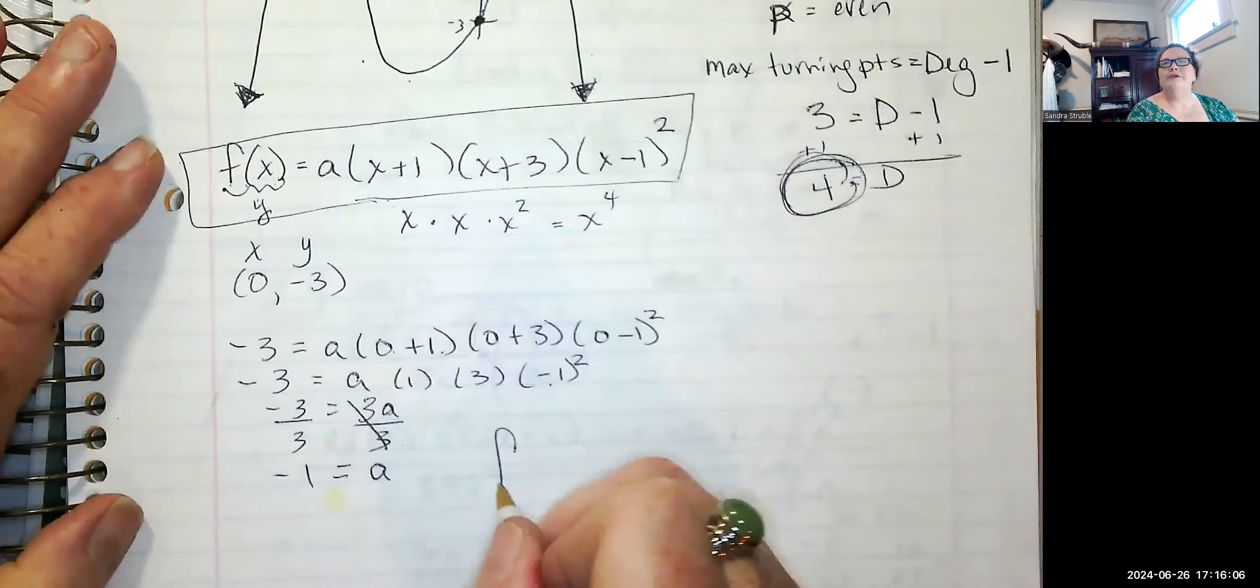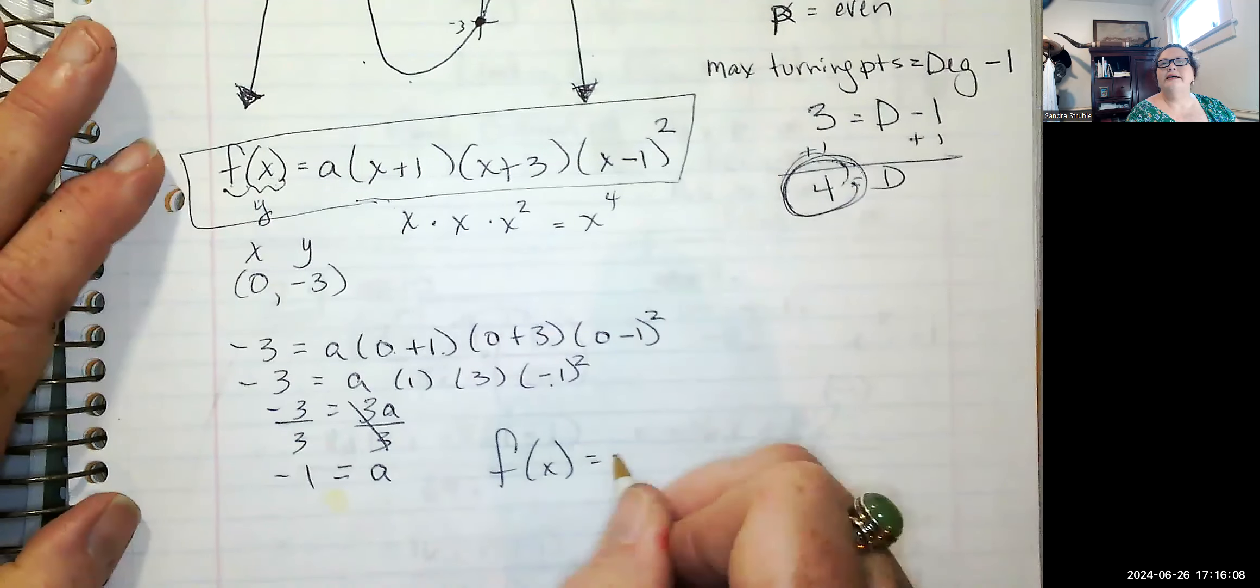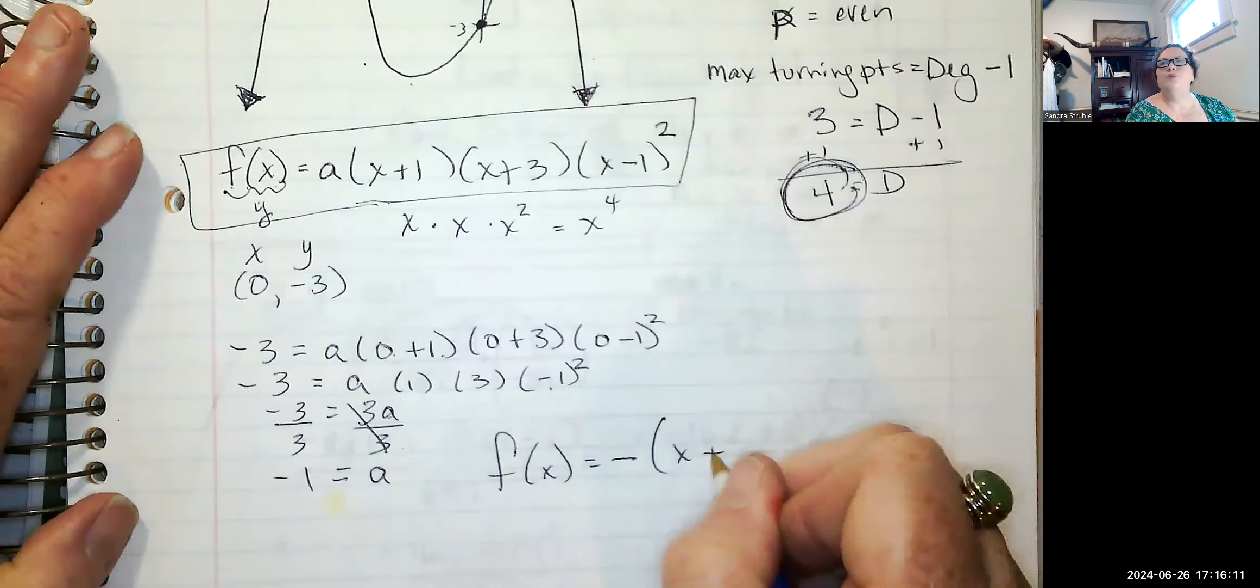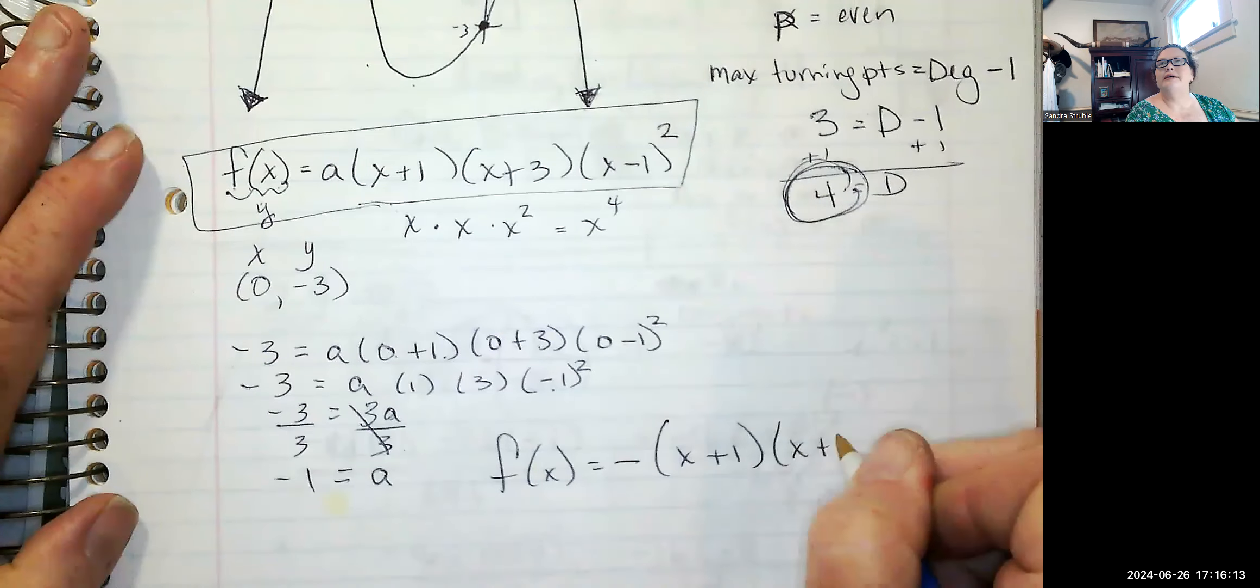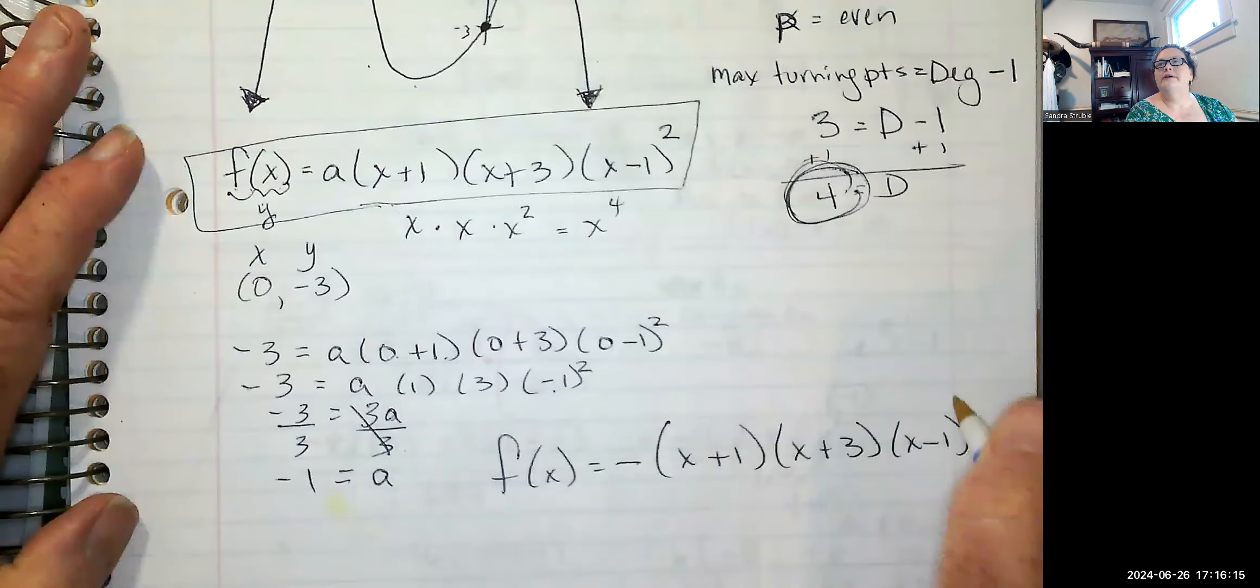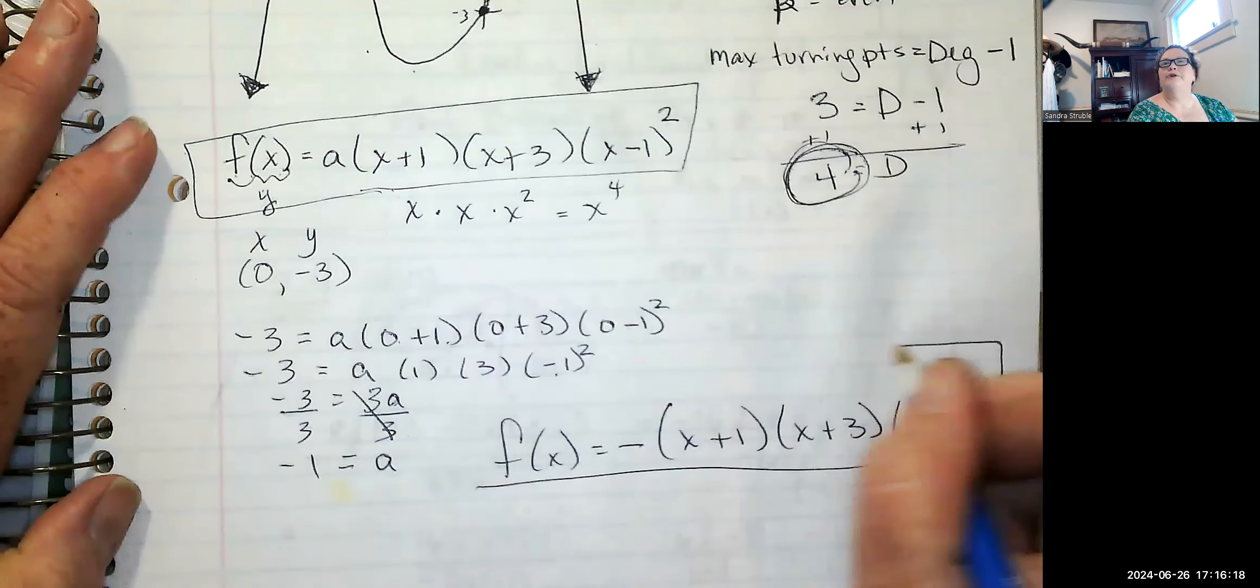So final answer. This function is negative. I don't need to put the one there. X plus one, X plus three, and X minus one squared. That is the polynomial.